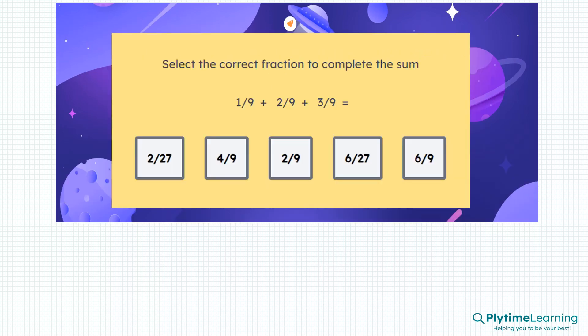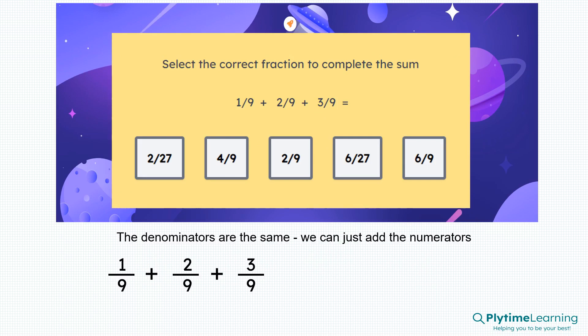What about this one? Here we have three fractions. The denominators are all the same, so we can just add the numerators. One ninth plus two ninths plus three ninths — it's the same as one plus two plus three over nine. One plus two is three, plus another three equals six, so it equals six ninths. The correct answer would be six over nine.